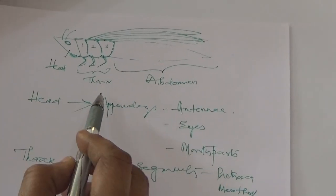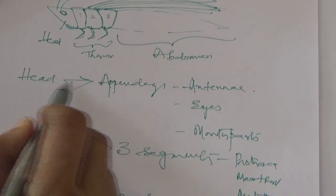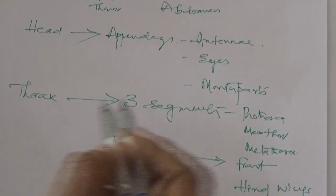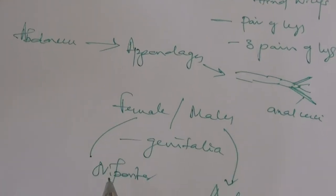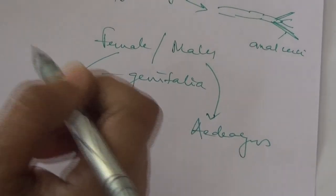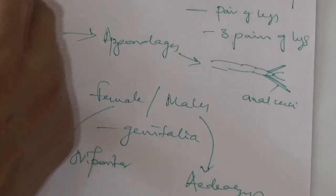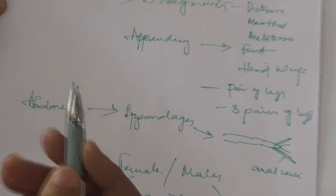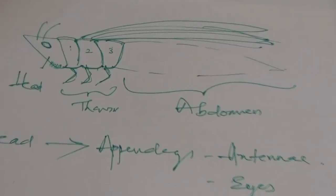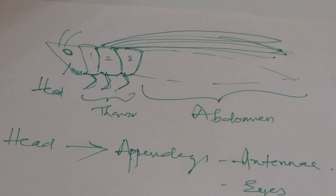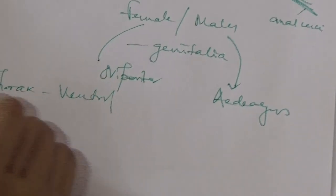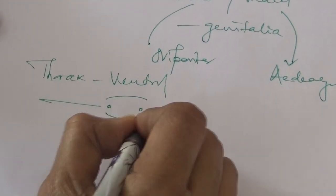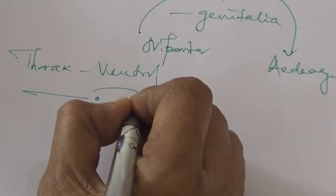So if you see any insect, first you have three parts: head, thorax, and abdomen. The head will have appendages; the thorax will have three segments with appendages like wings and legs; and the abdomen will have appendages like anal cerci or anal styli, plus reproductive organs like ovipositor and aedeagus. Now by holding an insect you can find how the body divisions are arranged, what appendages are present, and on the thoracic region on the ventral side you find small respiratory openings.